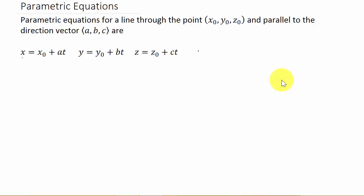For parametric equations for a line through a point (x₀, y₀, z₀) and parallel to the direction vector (a, b, c), here they are: x = x₀ + at, y = y₀ + bt, and z = z₀ + ct.